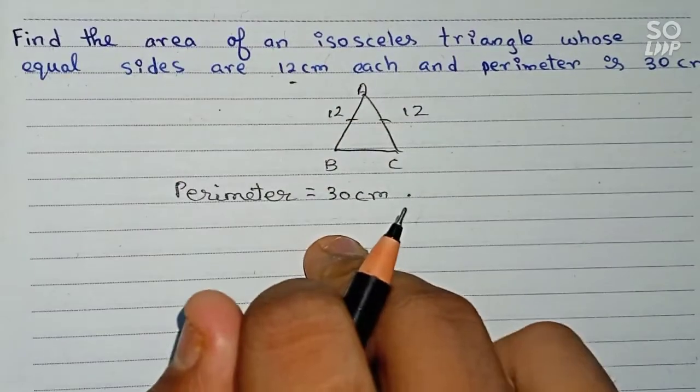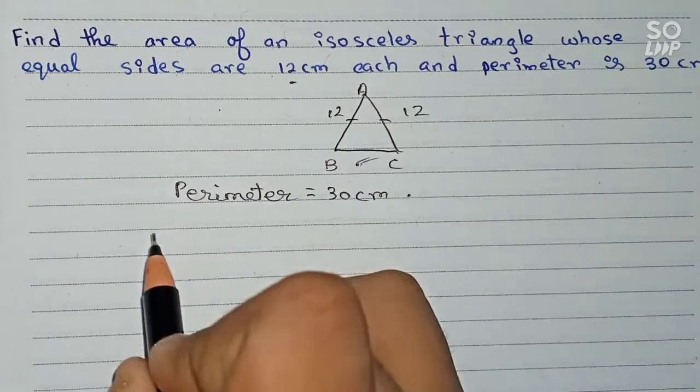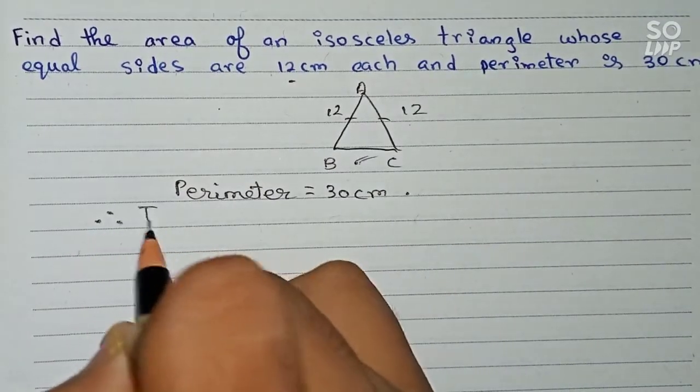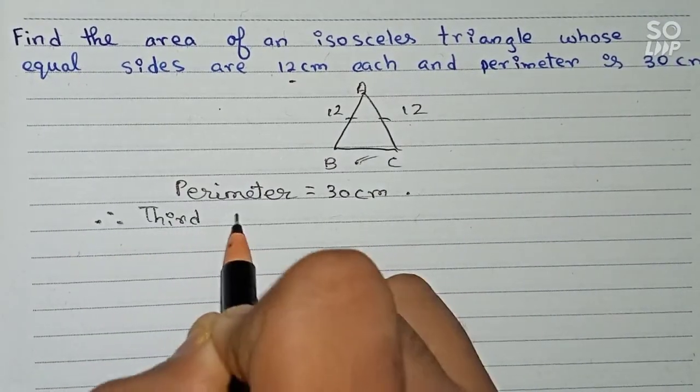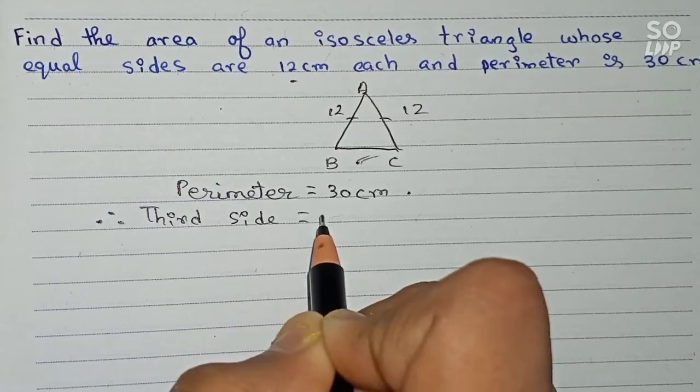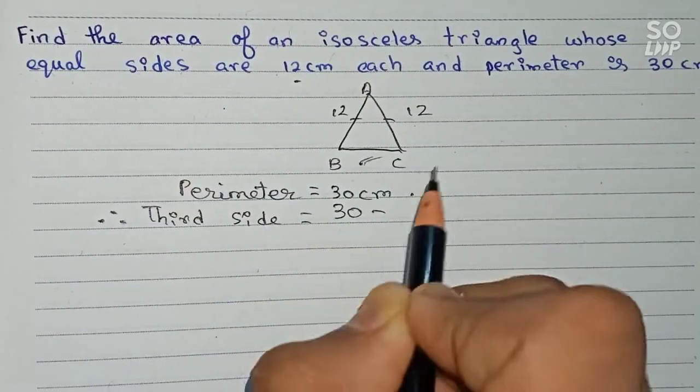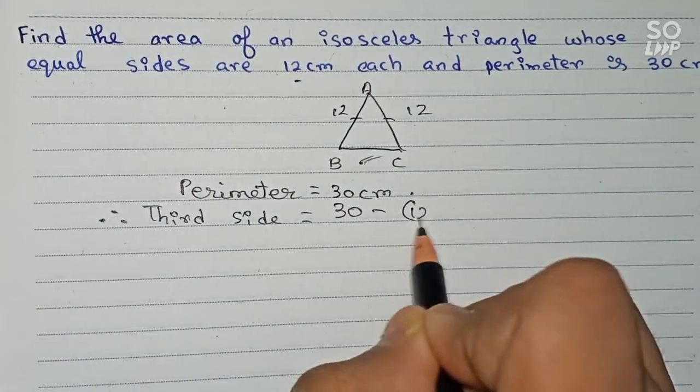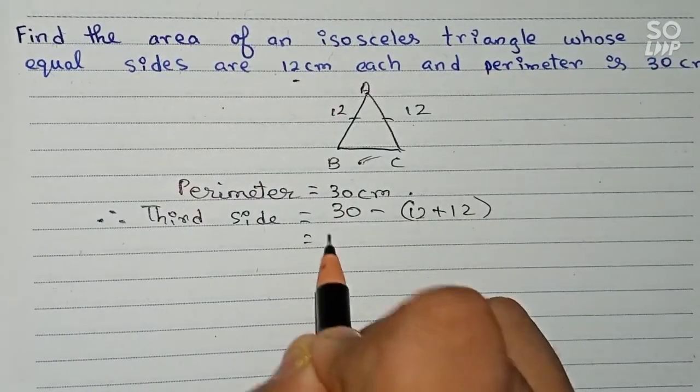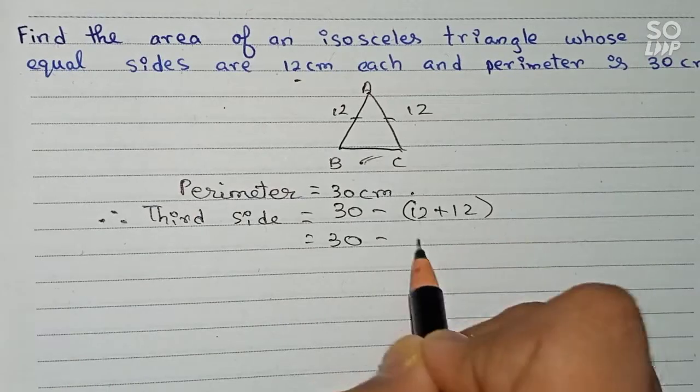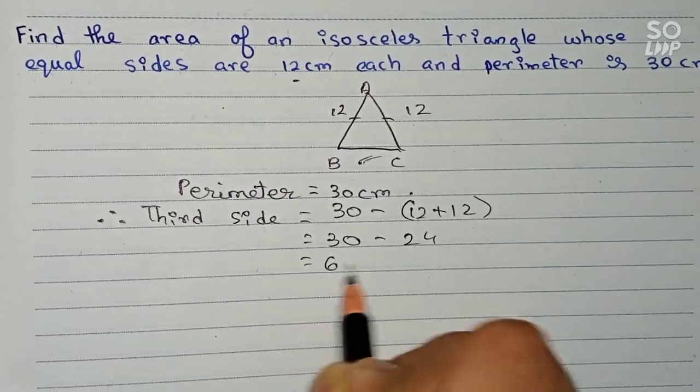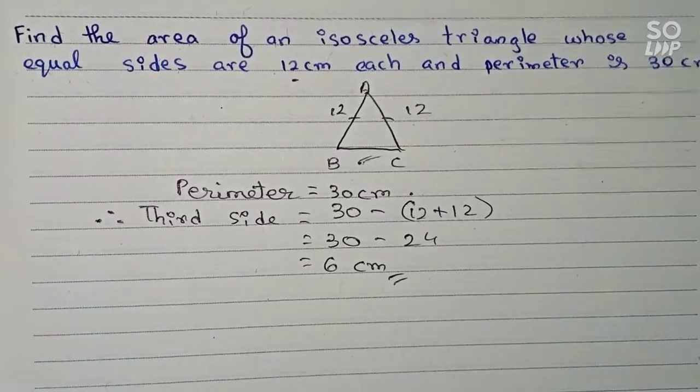So therefore with the perimeter you can easily find the third side. Therefore you write: third side equals the perimeter minus sum of two sides. So it becomes 30 minus (12 plus 12), that is 30 minus 24, equals 6 centimeters.